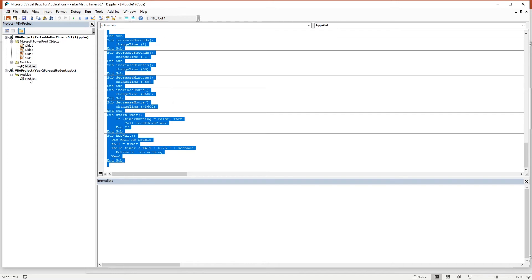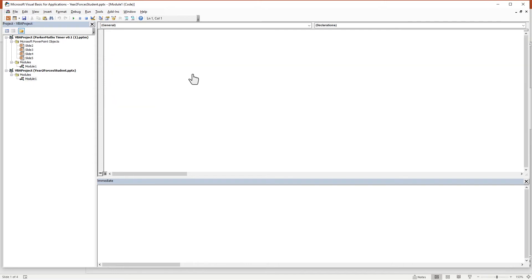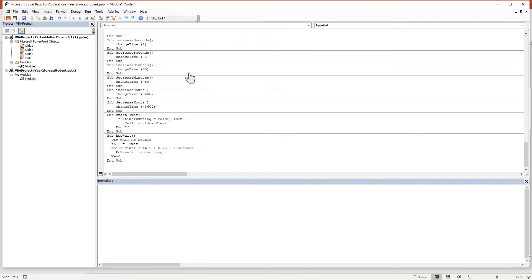Go into the other module one in the new PowerPoint and press Ctrl V to paste it. That's all you need to do with the code and that's all set up.